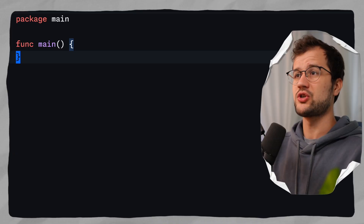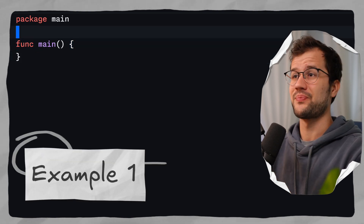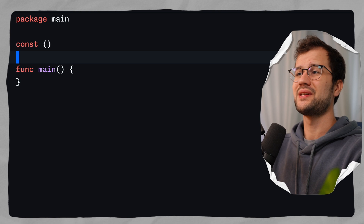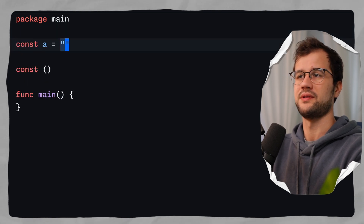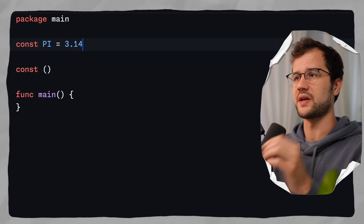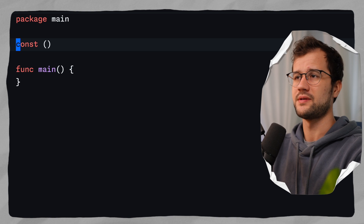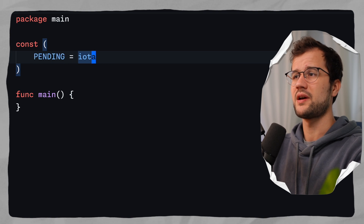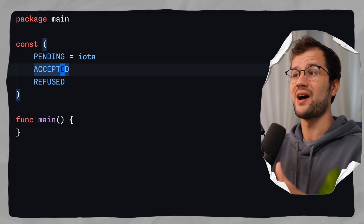I first want to demonstrate how we can actually define enums in Golang. I want to show you two examples and then we'll look at a more real-world use case. The first thing would be how to declare enums in Golang - we can use the const keyword here. You can define a group of constants with parentheses, or declare just a simple constant like `pi = 3.1415`. However, for enums we want to declare multiple constants. A typical way to describe an enum is to say pending with iota, then accepted, then refused. We've now actually declared an enum with three possible values.